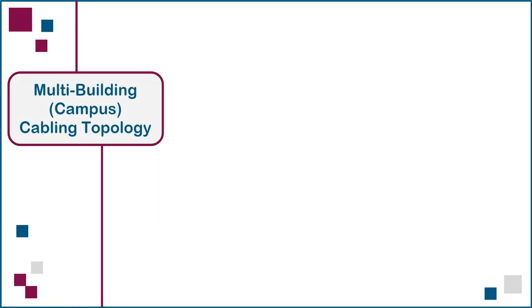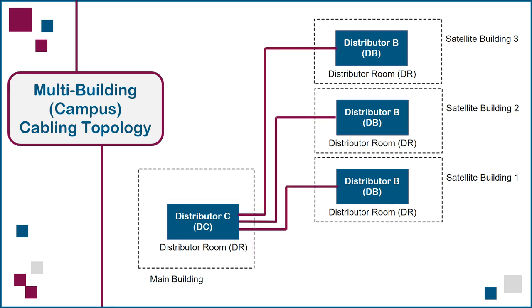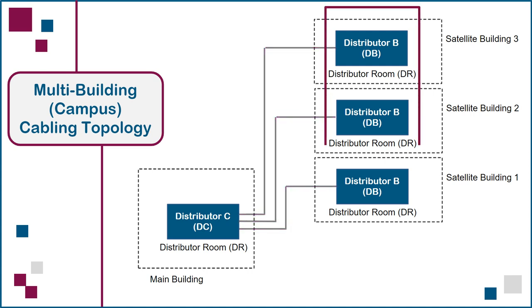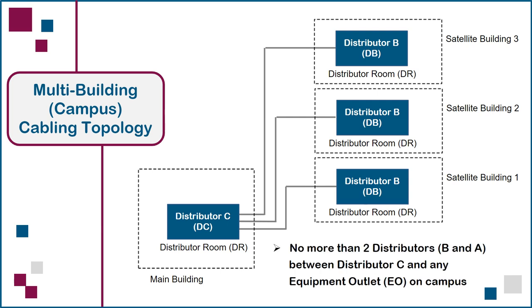Next, we'll apply the generic cabling model to a multi-building or campus environment. In this top-down view of a four-building campus, the distributor room in the main building on the left contains Distributor C, or the campus distributor. Outdoor backbone cabling connects this campus distributor to individual building distributors, or Distributor B's, in each of the three satellite buildings. Note that because this is a top-down view, the distributor rooms containing Distributor A's on each floor of every building cannot be shown. With this design, there are no more than two distributors, B and A, between Distributor C in the main building and any equipment outlet on any floor, anywhere on campus.